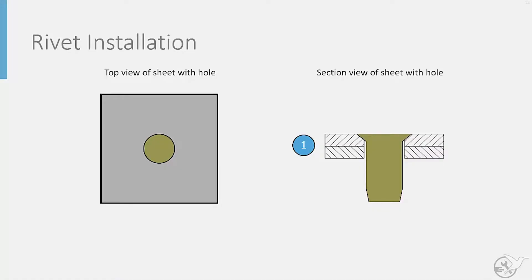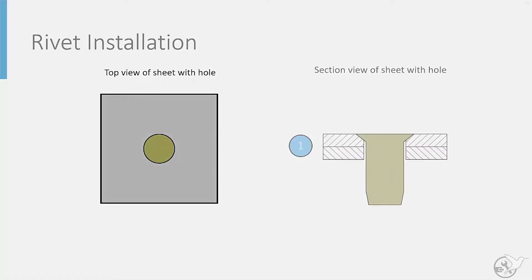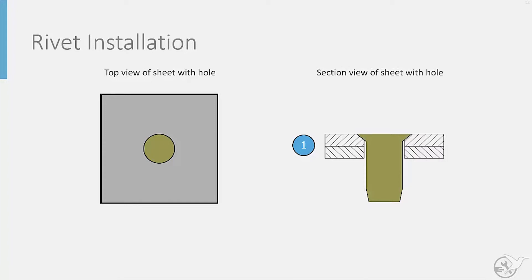Let's look at the rivet installation process step by step for the case of two thin sheets being joined, and try to understand the benefits of hole filling behavior. We will look at a top view of this process on the left, and a cross-sectional view on the right. First, a rivet is inserted into the holes drilled within the two thin parts being joined. As seen in the illustration, the size of the hole is actually larger than the rivet, making it easier to insert the rivet during this step.